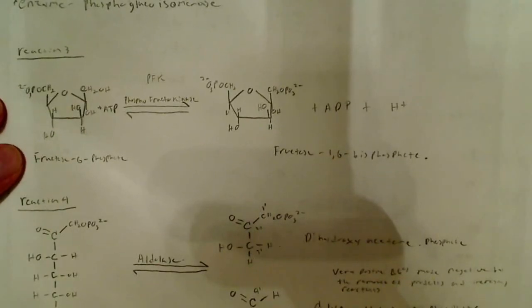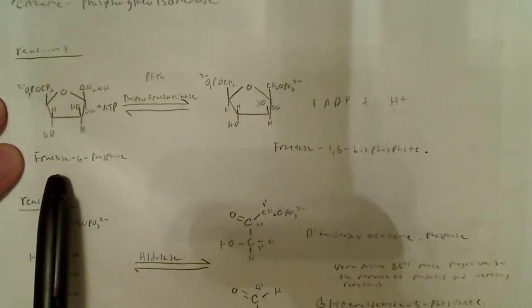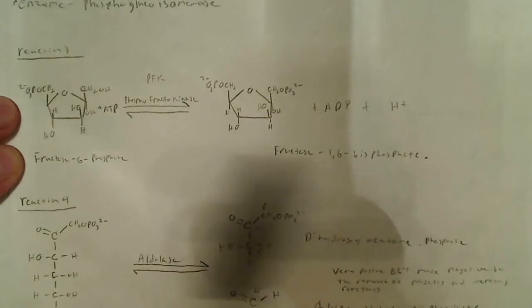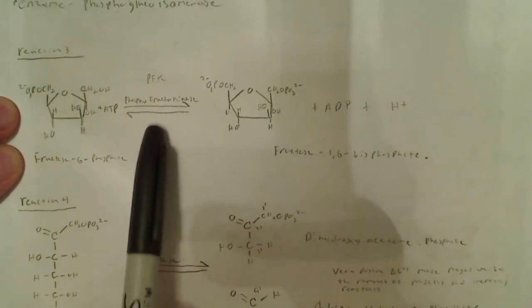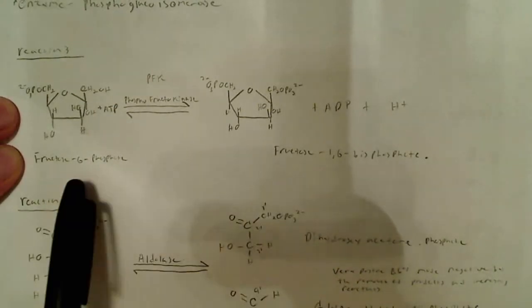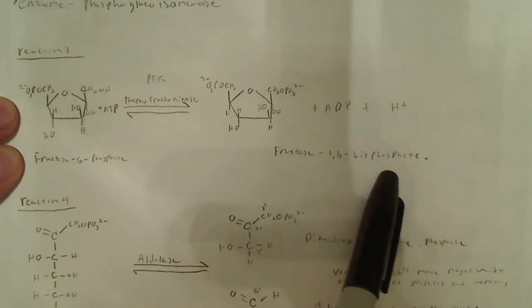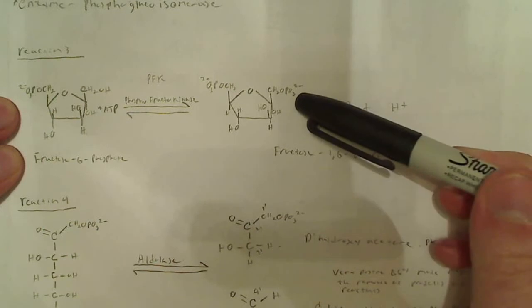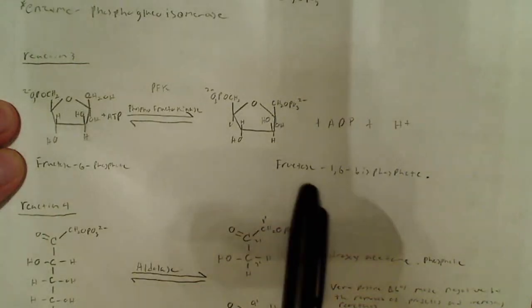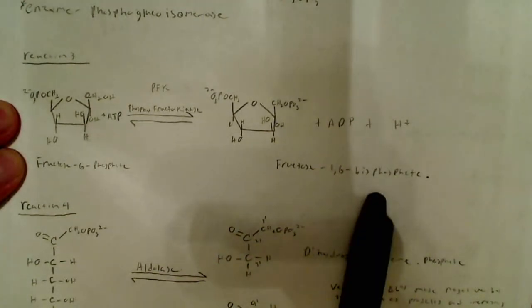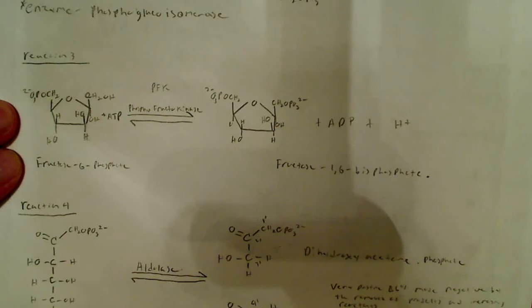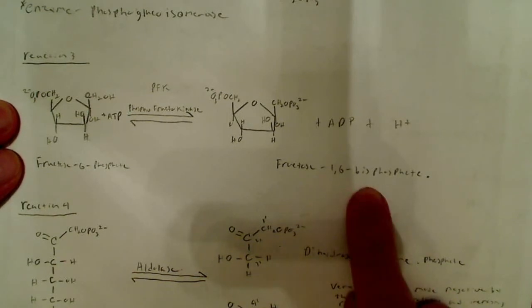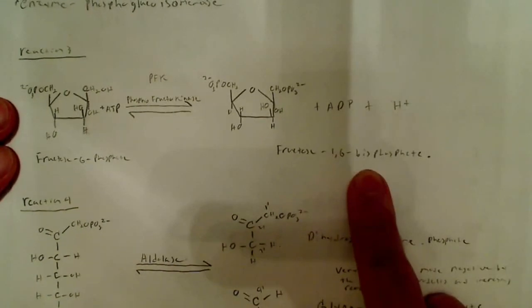Reaction 3 is another important, regulated step. Fructose 6-phosphate is converted to fructose 1,6-bisphosphate using ATP. The enzyme is phosphofructokinase 1 (PFK1). Fructose 1,6-bisphosphate is the committed molecule for glycolysis — other intermediates could be used in different pathways, but fructose 1,6-bisphosphate must go through glycolysis.